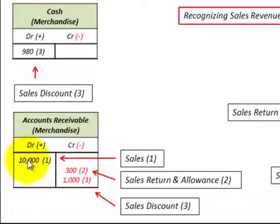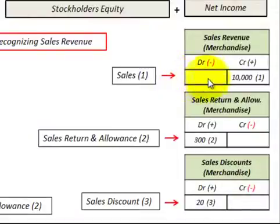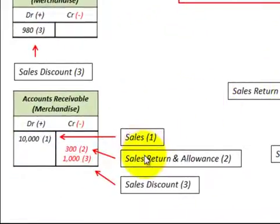Let's look at a typical sale. Say we sold ten thousand dollars worth of goods on credit to a customer. We debit accounts receivable for ten thousand dollars, and then the corresponding entry would be to credit sales revenue for ten thousand dollars.